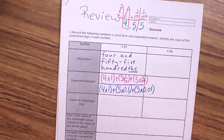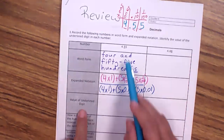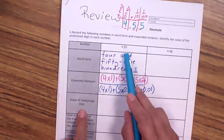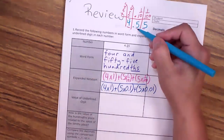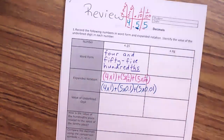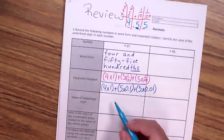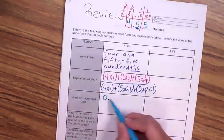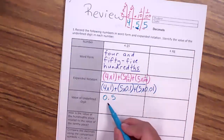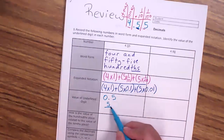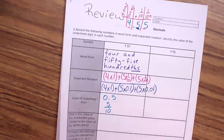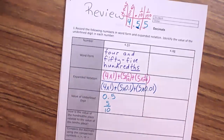So now let's go on to the next one. It says: what is the value of the underlined digits? The underlined digit is this one right here — that five. That five's value is 0.5. Its value can also be five tenths. So I've given the value of the digit.